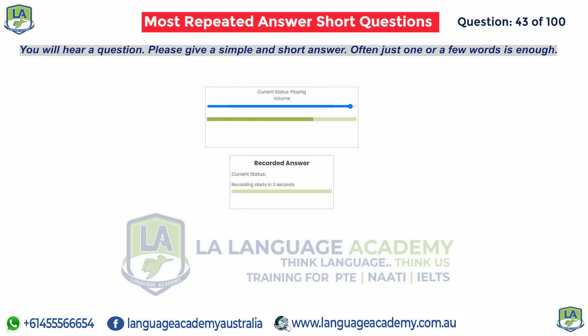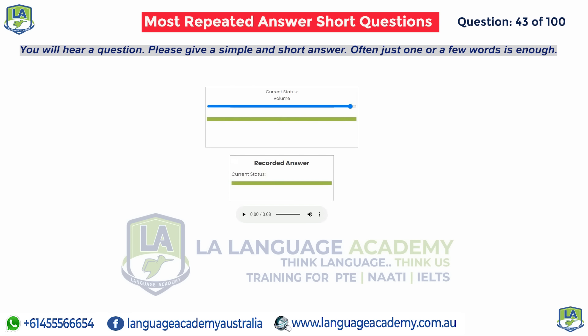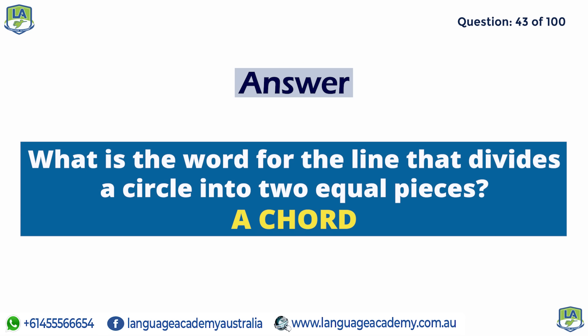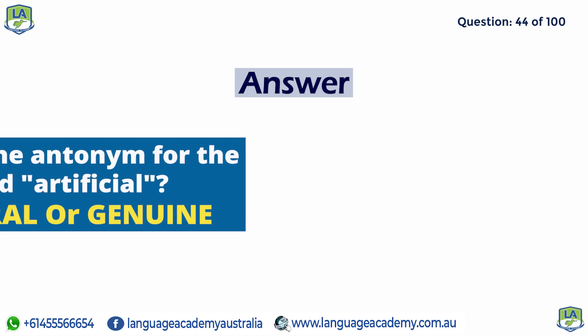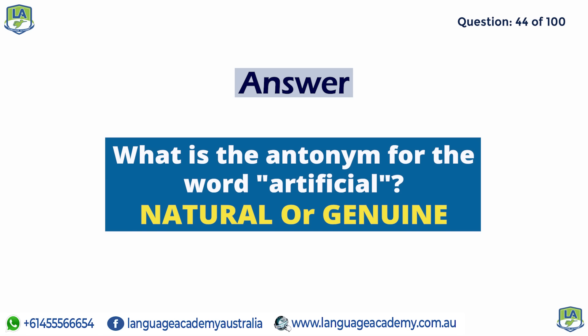What is the word for the line that divides a circle into two equal pieces? A chord. What is the antonym for the word 'artificial'? Natural or genuine.